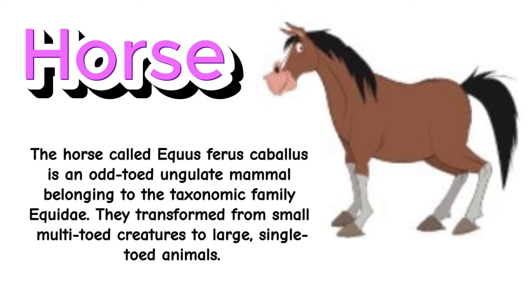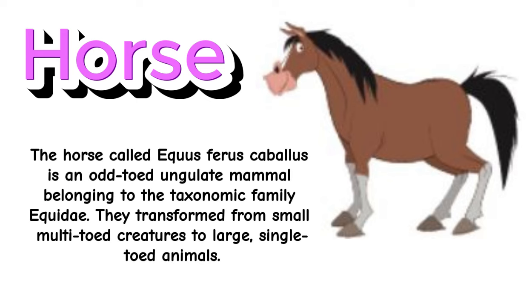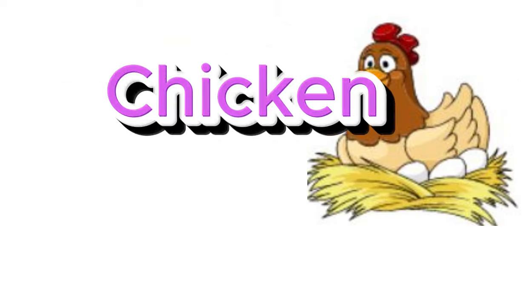Horse. The horse, called Equus ferus caballus, is an odd-toed ungulate mammal belonging to the taxonomic family Equidae. They transformed from small multi-toed creatures to large, single-toed animals.